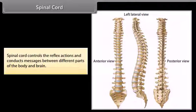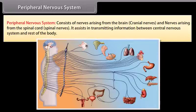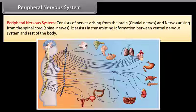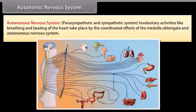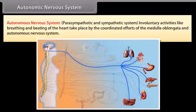The spinal cord controls reflex actions and conducts messages between different parts of the body and the brain. The peripheral nervous system consists of nerves arising from the brain (cranial nerves) and nerves arising from the spinal cord (spinal nerves), and assists in transmitting information between the CNS and the rest of the body. The autonomic nervous system includes the parasympathetic and sympathetic systems. Involuntary activities like breathing and beating of the heart take place by the coordinated efforts of the medulla oblongata and the autonomic nervous system.